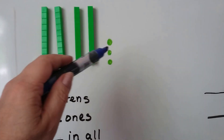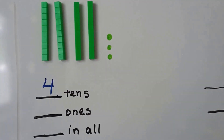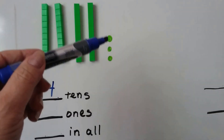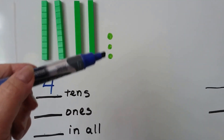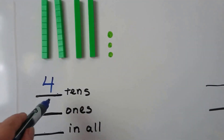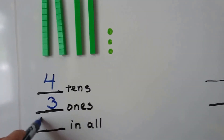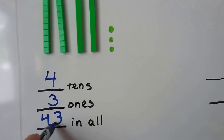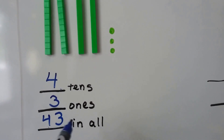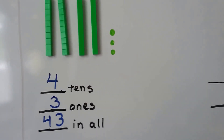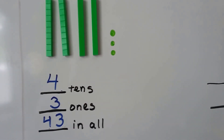How many ones do we have? One, two, three. We have four tens, three ones. We have 43 in all. We have a two-digit number, 43.